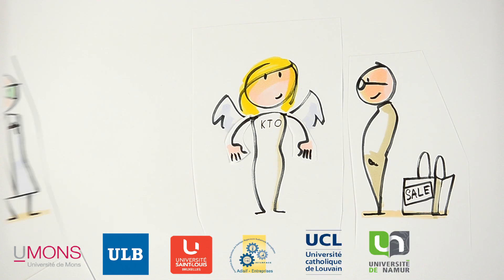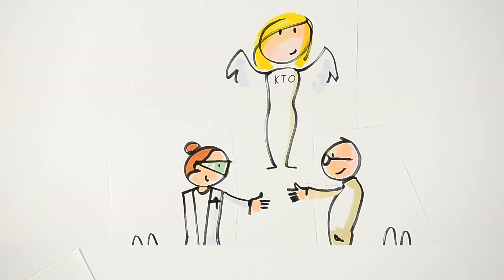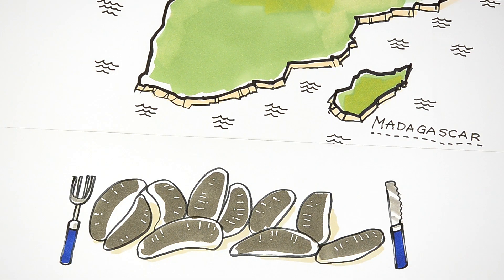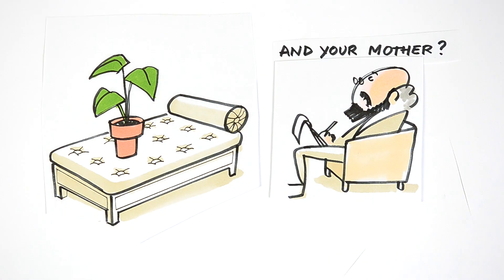KTO put researchers from different universities and colleges in touch with businesses, and then you can come up with all sorts of inventions. Here in Madagascar, a sea cucumber farm becomes a source of revenue for local people.